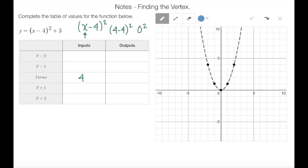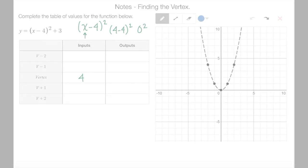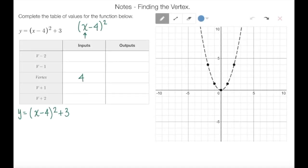To find the actual output of that vertex, I'm just going to continue to evaluate the function that I was given. So here's the function, and I'm going to replace x with 4 and then continue to evaluate until my math is done. So 4 minus 4 is 0, 0 squared is 0, 0 plus 3 gives me an output of 3.